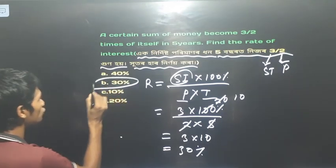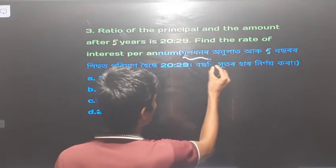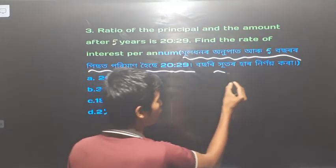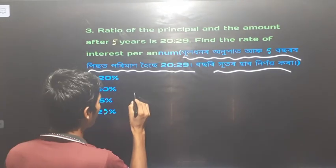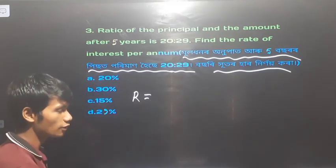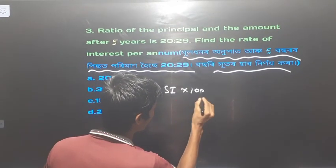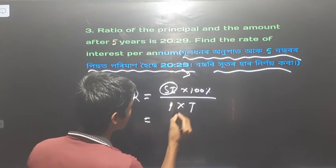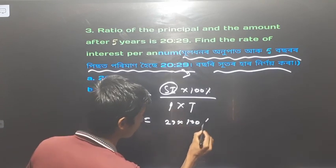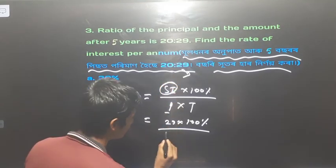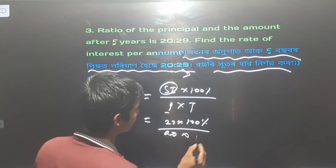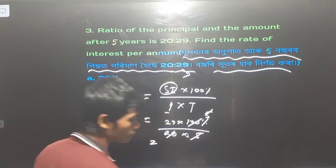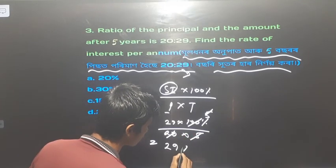i into 100, divided by p into t. If the result is 29 into 100 percent, divided by p — applying the correct values — a person should choose 5 into 10 percent.